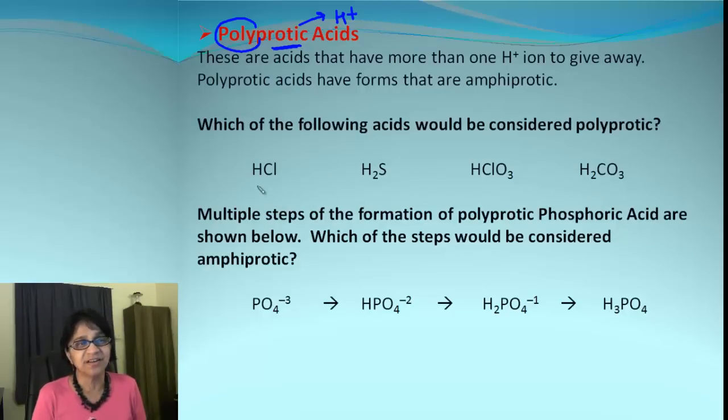The first one, HCl, has only one hydrogen, so that will not be a polyprotic acid. Second one has two hydrogen, so yes, it will be a polyprotic acid. The third one again, it's one single hydrogen, so it cannot be polyprotic.